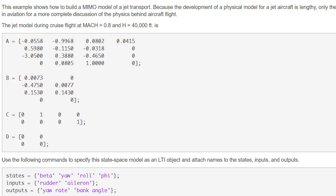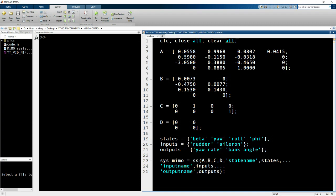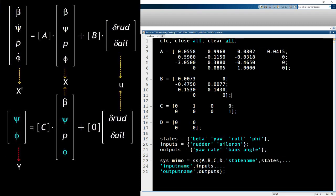So we're in MATLAB now, and the first thing I did was I copied all the matrices from the work website into here. When we run this, we can see you have your four states: beta, yaw rate, roll, and Phi. Outputs are yaw rate and bank angle, inputs are rudder and aileron.